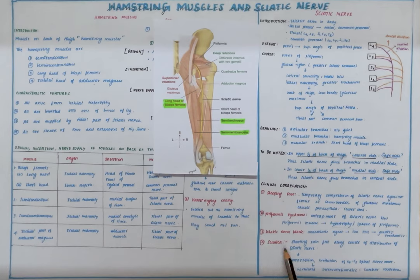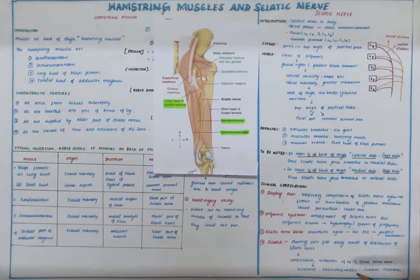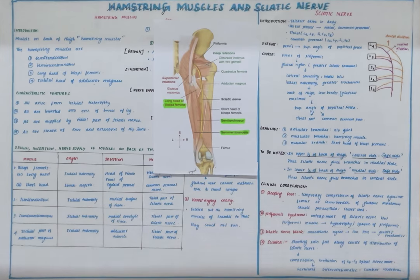Then we have sciatica, which is a shooting pain felt along the course and distribution of the sciatic nerve. It can be due to compression of the L4 to S3 spinal segments caused by a herniated intervertebral disc or other conditions. Thank you.